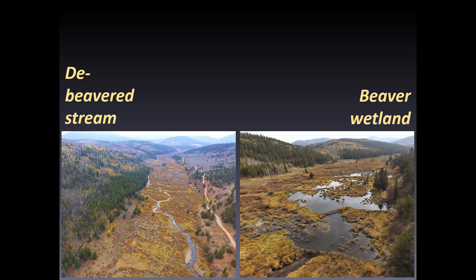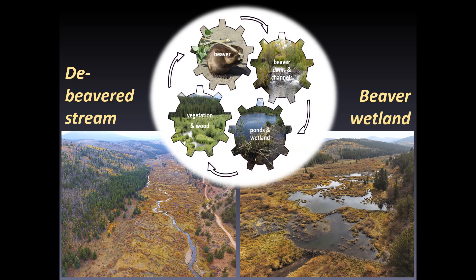Jessica showed you these photos in her 2022 talk. The one on the left is a de-beavered stream reach that we wanted to treat. The one on the right is a reach just upstream that's a full-on beaver wetland. Jess reminded us that when beavers are present the way they were before they were extirpated, they create and maintain wetlands in a positive feedback loop. Riparian vegetation and wood supports beavers as food and building materials. Beavers build dams and channels to create their own habitat, then these structures raise and spread water, creating ponds, wetland, and hyporheic flow. These support riparian vegetation and wood that in turn supports more beavers.